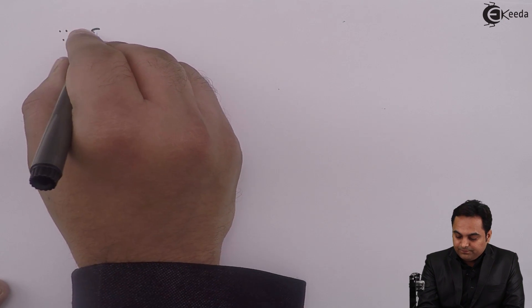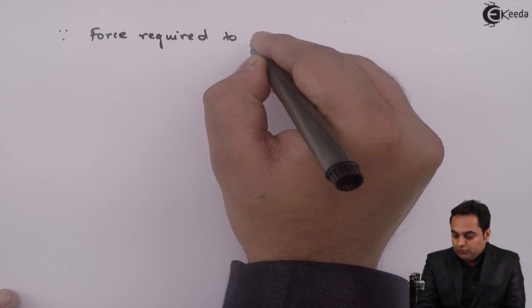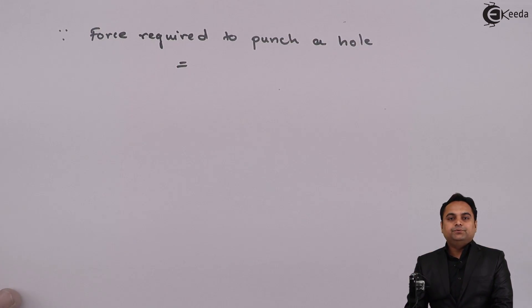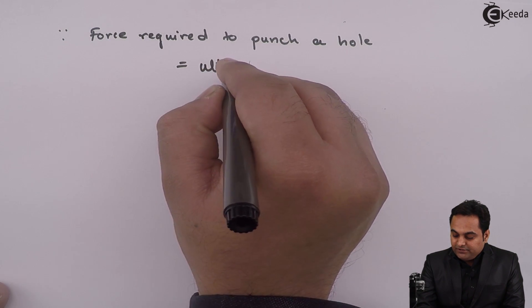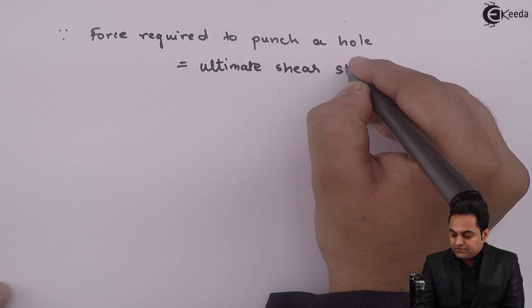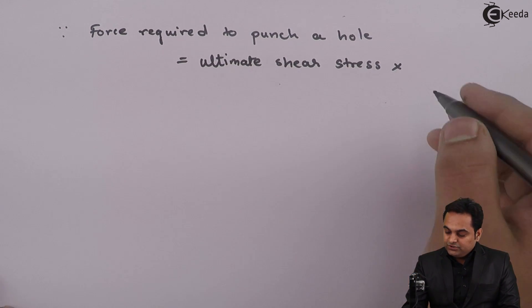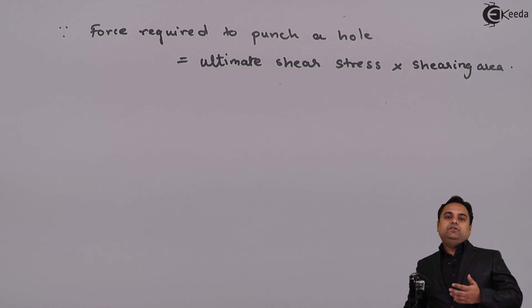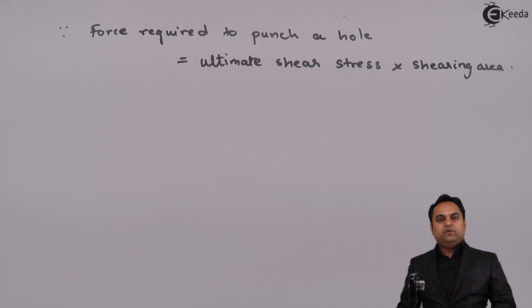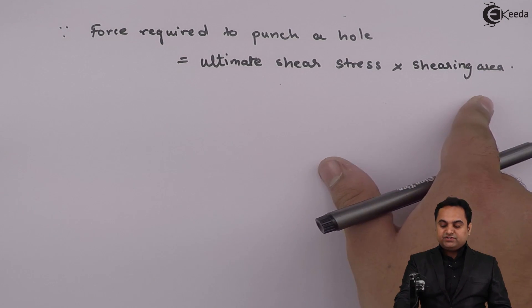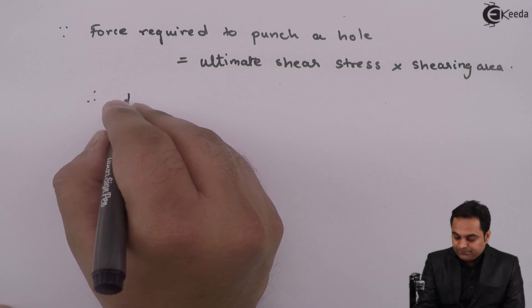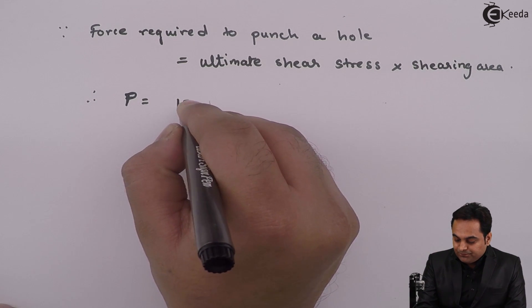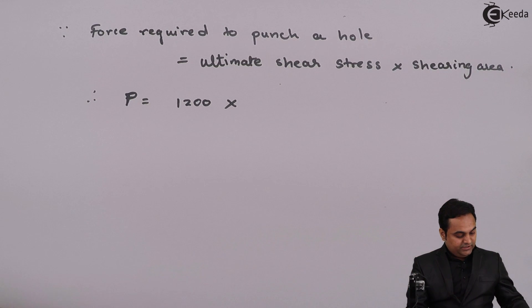After getting the ultimate shear stress, the force required to punch a hole equals ultimate shear stress multiplied by shearing area. This is because force equals stress times area — here we want the shear force, which equals shear stress times shearing area.